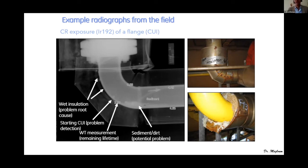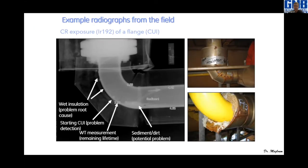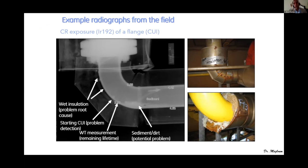A question from Turkey: what are the tolerances for CR and DR when measuring dimensions? Very good question — it is almost 0.02 mm tolerance for any measurement, including small dimensions. That is 0.02 mm tolerance.